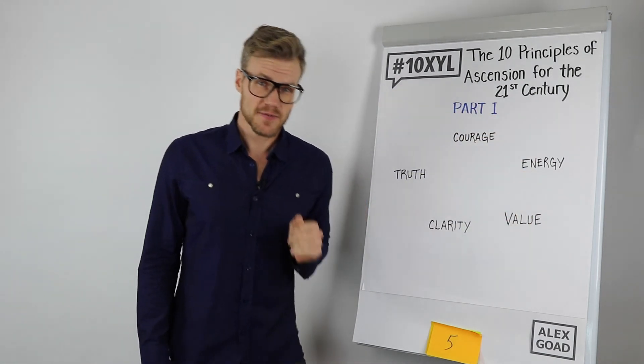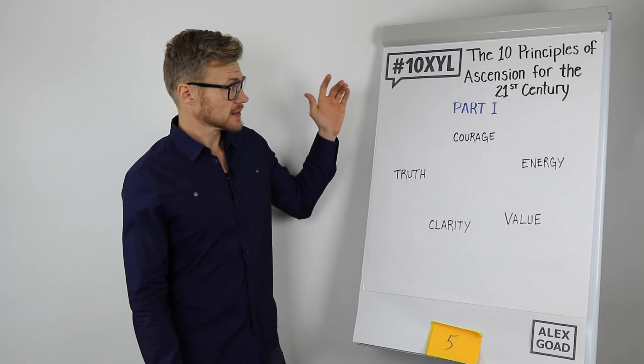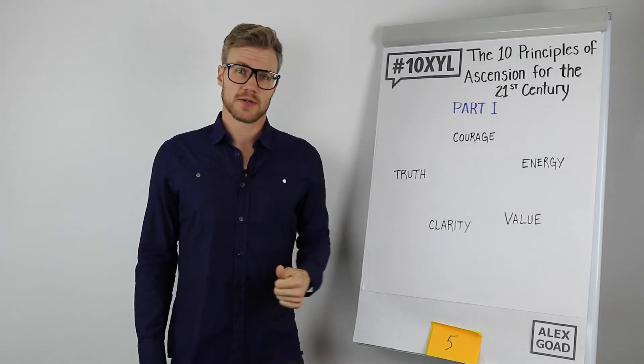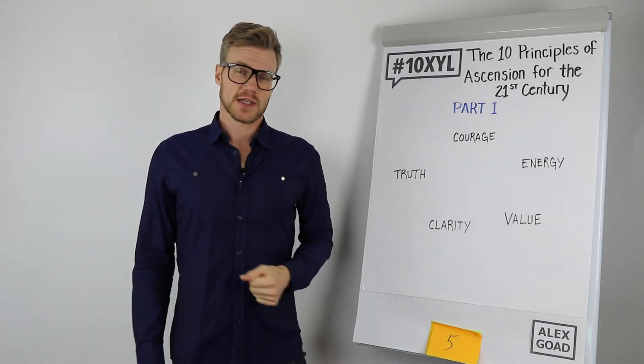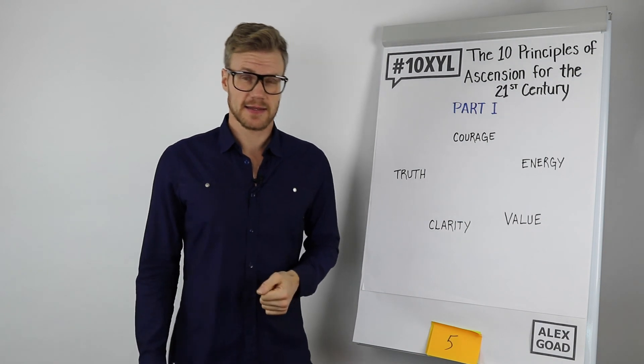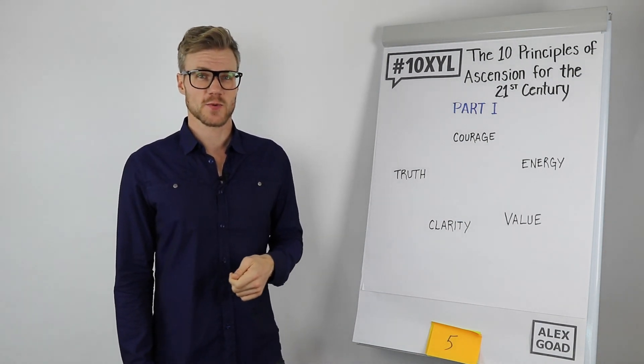And so learning these principles and living by them might be the most intelligent and valuable thing that you can ever do because it will influence the results that you get from every other minute of your life that you live. So if you can do these five, you'll have exactly 50% of what it takes to live an extraordinary life. And I'm going to give you the other five in the next video. So, hey, thanks for listening. I'm Alex Goad, and I'm reminding you that today counts. So behave yourself accordingly. Thanks for watching.